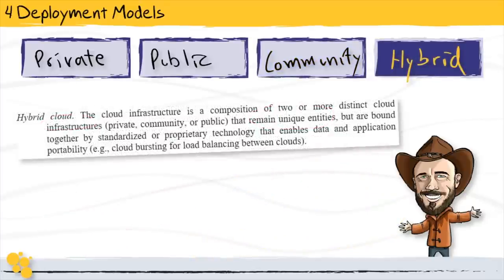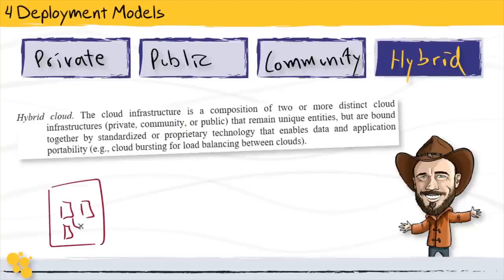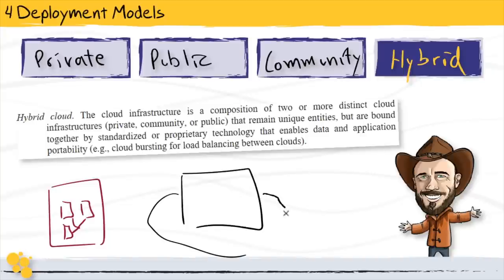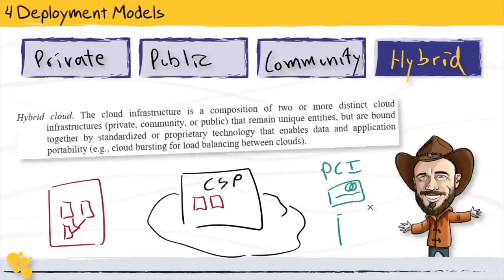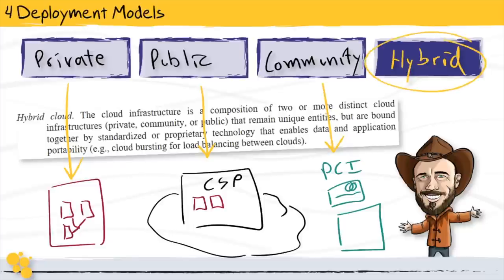The final deployment model is hybrid cloud, and this is the one we'll see most often because it lets us take a bit of whatever we need. We might run our own networks and cloud services in an enterprise data center as part of a private cloud model, also push some workloads — like public web servers — to a cloud services provider, and additionally use a PCI credit card processing organization for payment card industry needs. In this way, we take advantage of all different types of cloud computing services and get different types of value from each. Hybrid cloud solutions, when done properly, are the most valuable because they let us custom tailor directly to our needs.